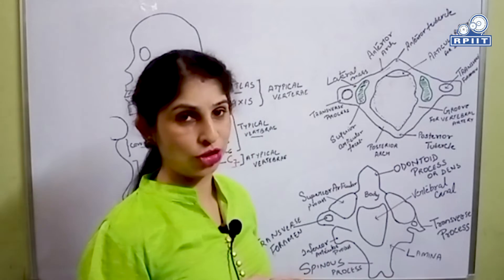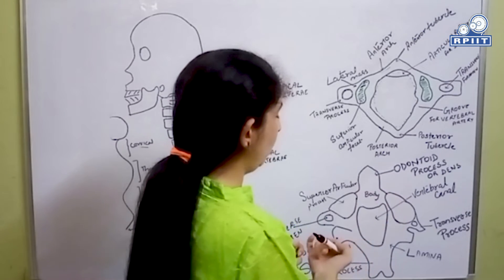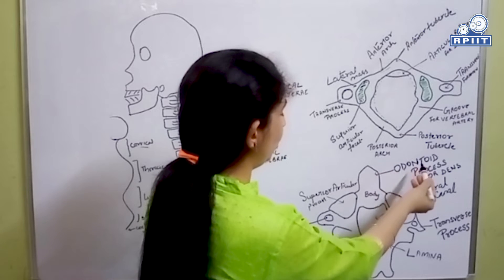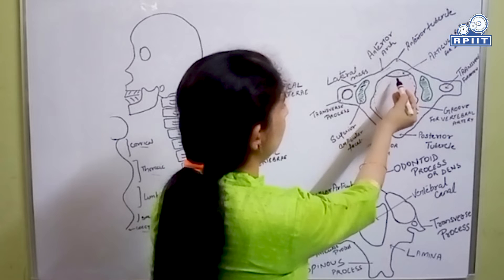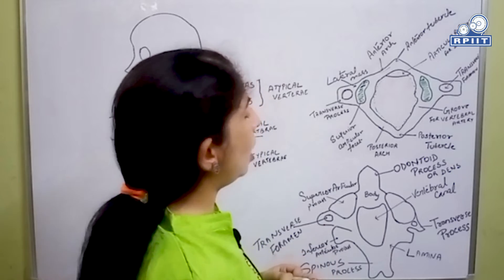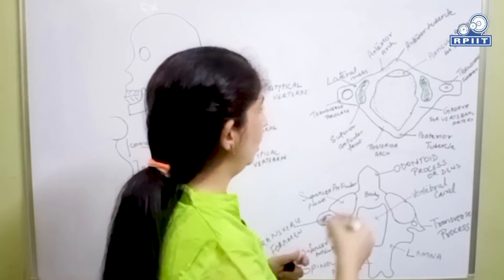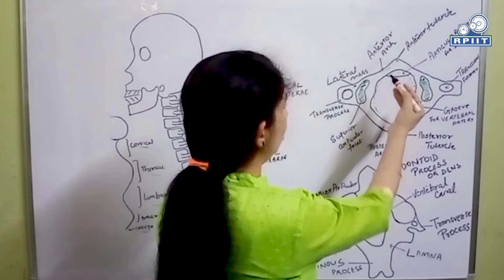This odontoid process articulates with the oval facet present on the posterior surface of the anterior arch of atlas. The odontoid process is actually the body of the atlas, which detached from its center and fused with the body of axis.